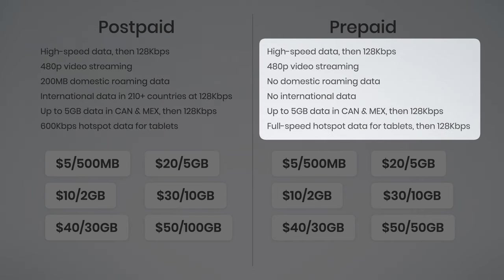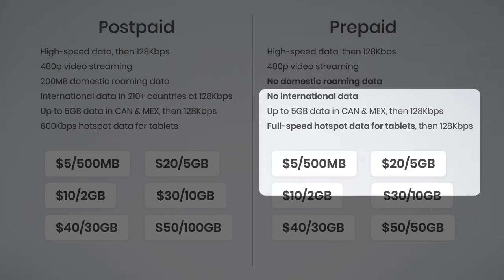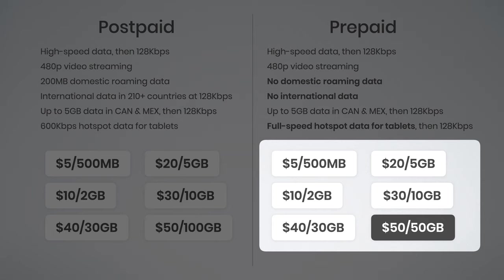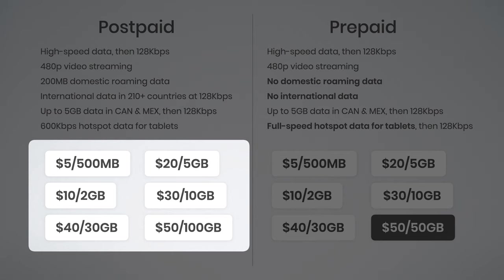On the prepaid side, there are four key differences. Number one: you don't get the 200 megabytes of domestic roaming data, meaning your tablet won't switch to a partner network like AT&T in areas without T-Mobile coverage. Number two: you don't get any international data — this plan only works domestically in the United States, except in Canada and Mexico where you still get 5 gigs of high-speed data. Number three: you get full-speed hotspot data for tablets — whether it's a $10/2GB or $40/30GB plan, all that data can be used at full speed directly or shared as hotspot. Number four: the $50 plan only includes 50 gigabytes on prepaid, versus 100 gigabytes on the postpaid option.